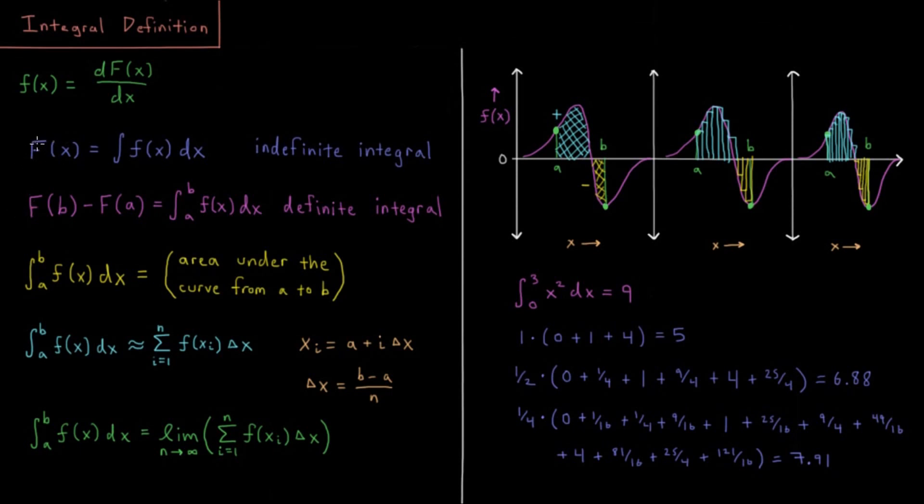So big F, our function is the integral of little f, and the value of our function big F at b minus its value big F at a is equal to the integral from a to b of f integrated with respect to x. So this type of nomenclature would be what we call a definite integral, the integral from a to b.